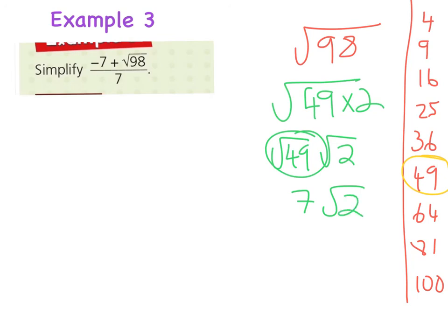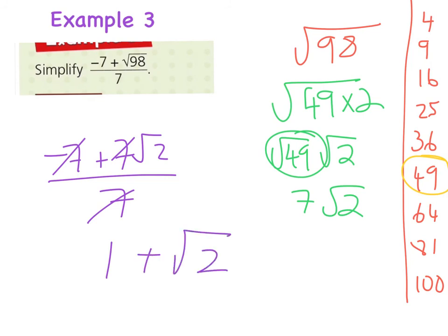So if I was to write that down, it's now -7 plus, instead of saying √98, I'm going to write 7√2, all divided by 7. And so this I can do quite easily. 7 goes into -7 once, and 7 goes into 7 once. So I have -1 + √2 here. And that's how I can use division by simplifying the surd down.